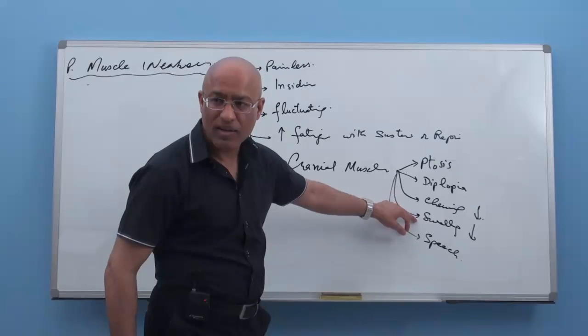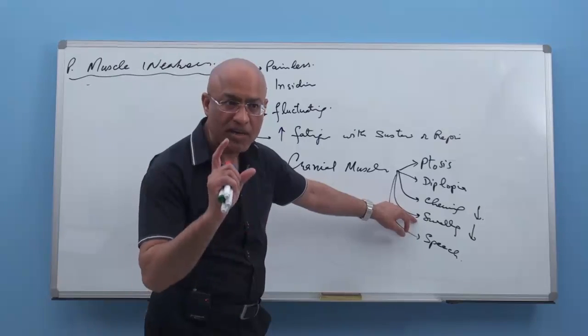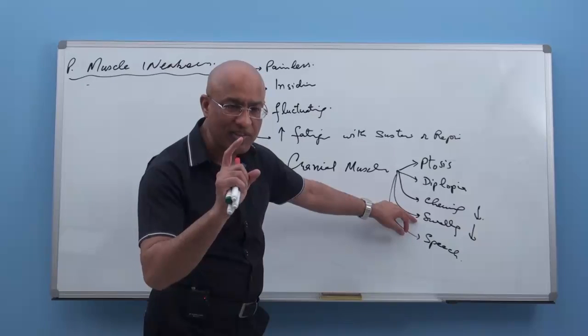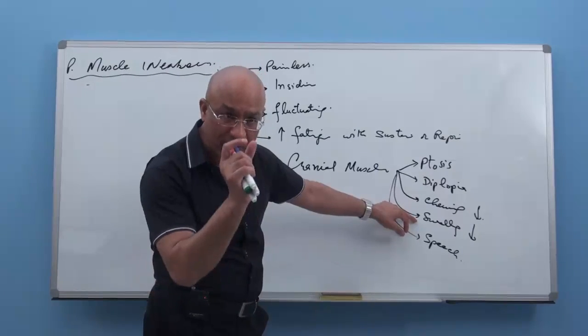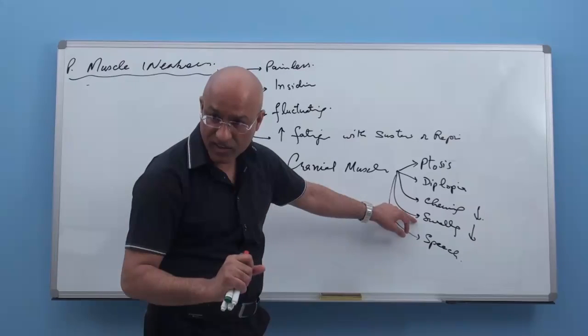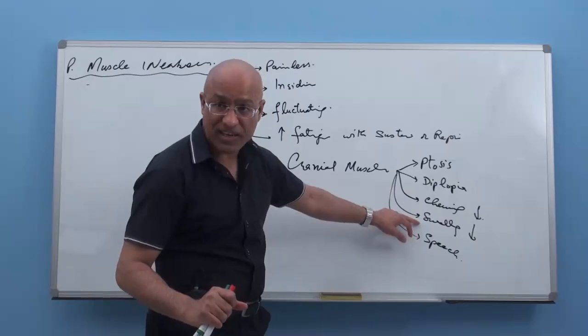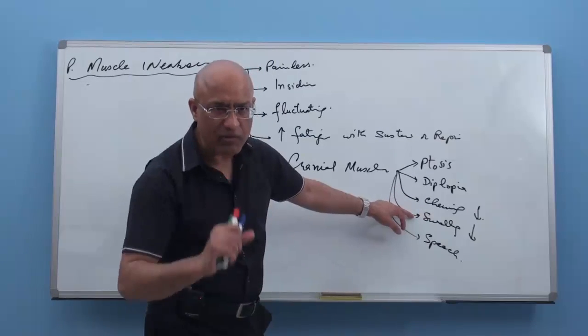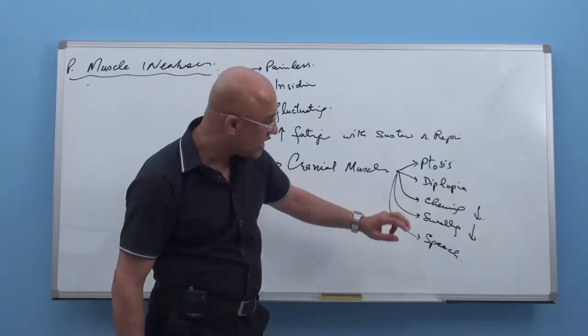Pharyngoesophageal muscles. Because remember, upper part of esophagus and lower part of pharynx, they are having skeletal muscle, voluntary muscles. Middle and lower part of the esophagus have smooth muscles. So swallowing becomes difficult. And many of these patients, if they are not diagnosed well, due to reduced intake of food, they have weight loss as well.